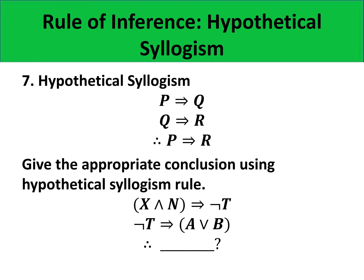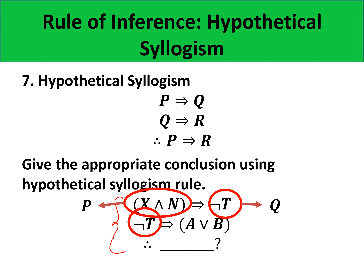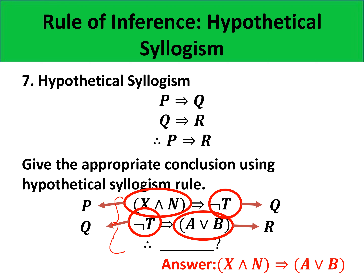Let us identify the correct conclusion for the following argument. Here, X and N takes the role of P, and negation of T takes the role of Q for the first premise. For the second premise, negation of T takes the role of Q, and the quantity A or B takes the role of R. Since this follows the form of hypothetical syllogism, the conclusion must be P implies R — that is, the quantity X and N implies the quantity A or B. So in this video, you have learned the rules of inference, which are known to be valid arguments.